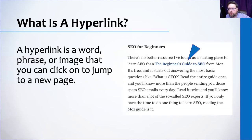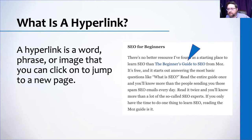A hyperlink is a word, phrase, or image you can click to jump to a new page. You just highlight the phrase and click the link button to embed a URL. An important vocabulary term here is anchor text — the specific clickable words in a hyperlink. Anchor text helps Google understand what that linked page is about.